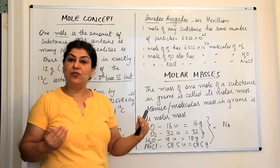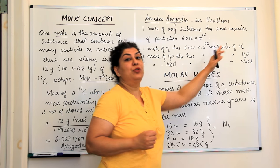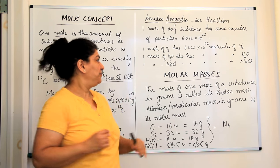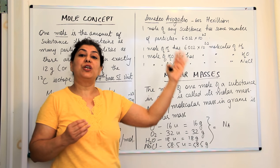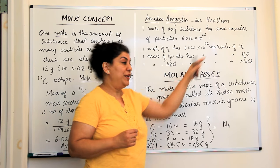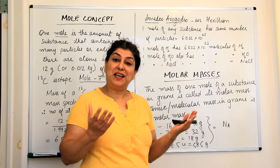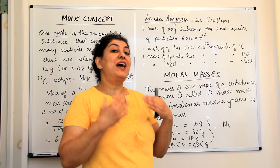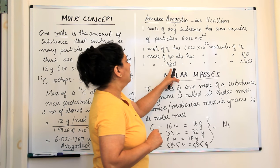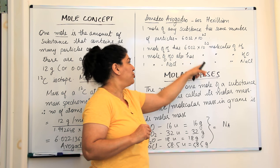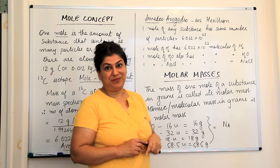One mole of hydrogen molecules, H2, would have Avogadro's number of molecules of H2. If you have one mole of water, this would have 6.022 into 10 to the power 23 molecules of water. If you have one mole of sodium chloride, sodium chloride is an ionic compound and I told you in the previous video that it does not have molecules, it has formula units. So, sodium chloride has 6.022 into 10 to the power 23 formula units of sodium chloride.